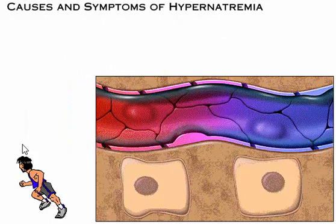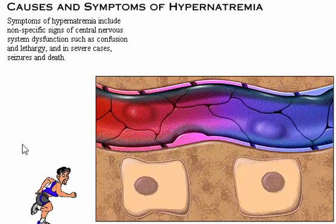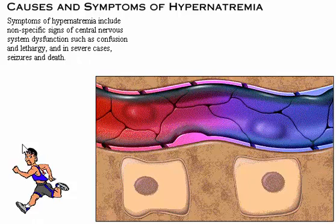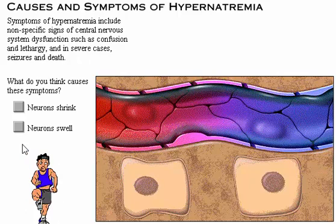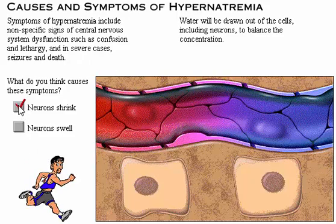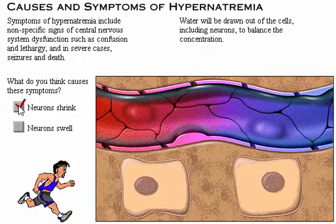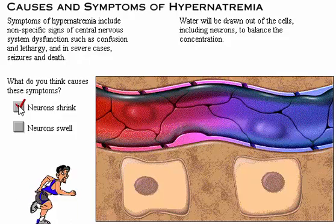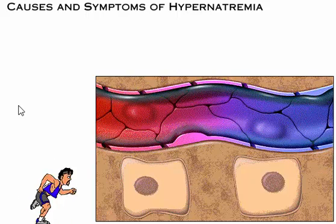The runner appears to be confused and disoriented. Symptoms of hypernatremia include nonspecific signs of central nervous system dysfunction, such as confusion and lethargy, and in severe cases, seizures and death. Because the osmolarity of the extracellular fluid is higher than that of the intracellular fluid, water will be drawn out of cells, including neurons, to balance the concentration.